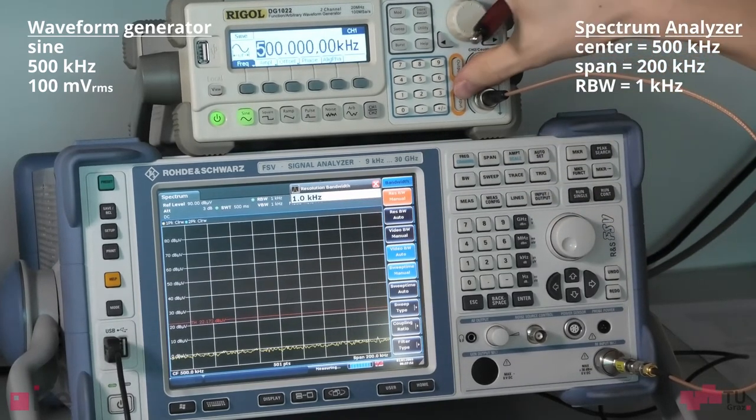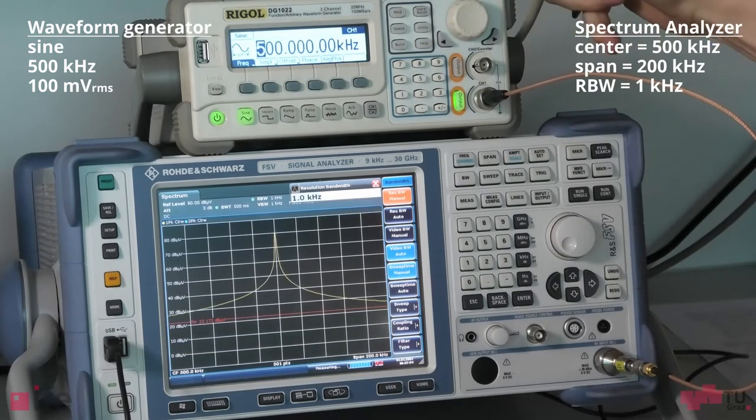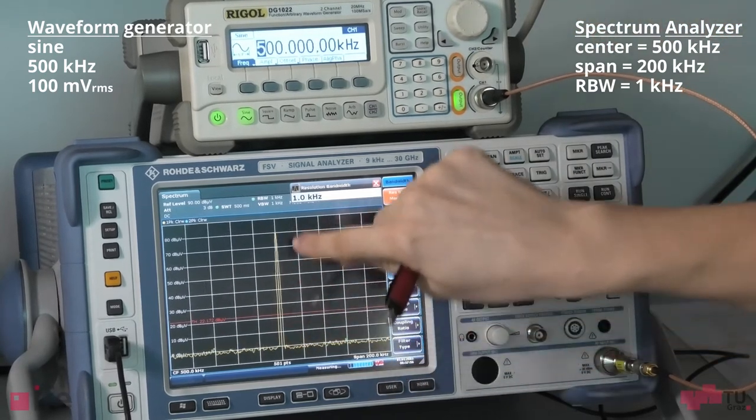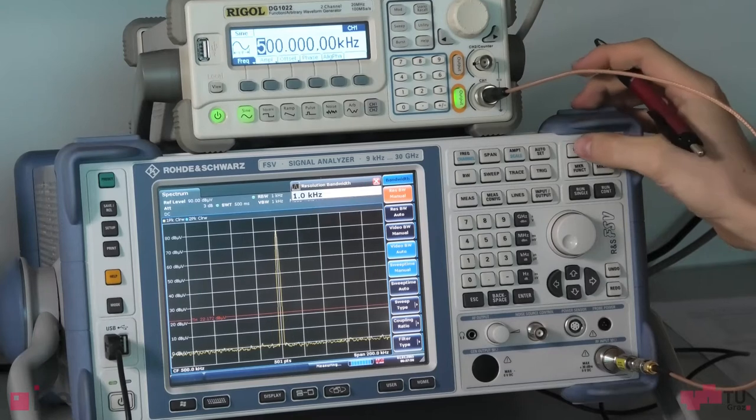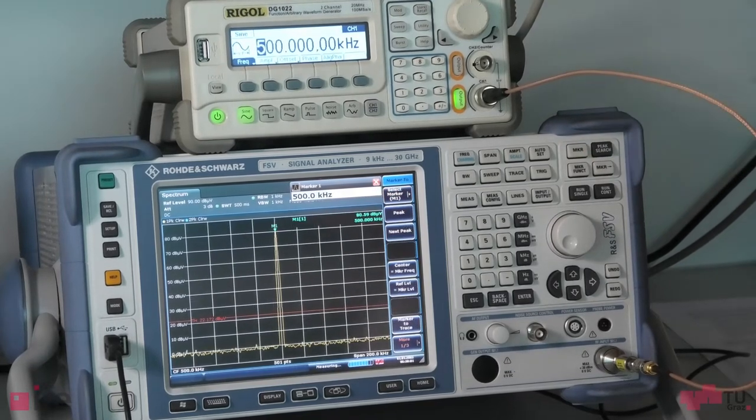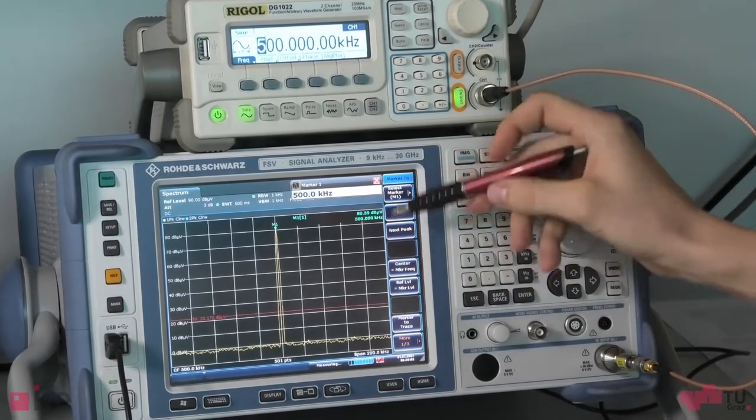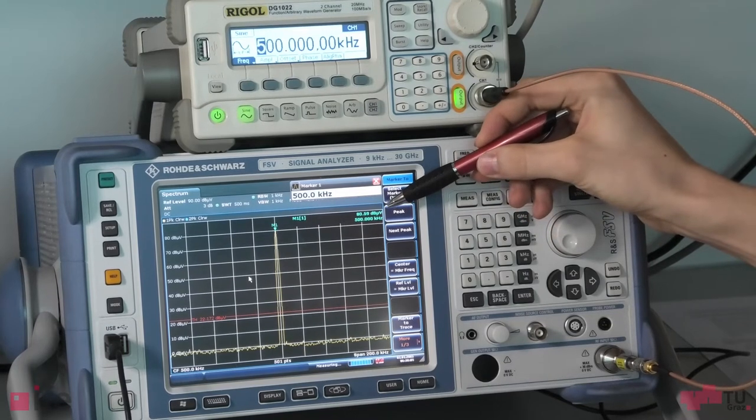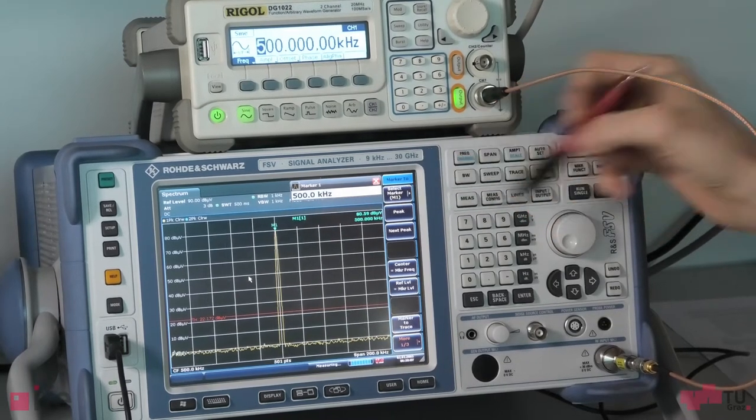Now let's turn on our waveform generator and we can see one single peak at our set frequency of 500 kilohertz. Let me just put a marker here. We can see at 500 kilohertz we've got an amplitude of about 81 dB microvolts.